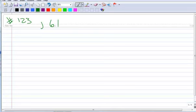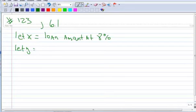So the first thing we want to do, because we have two loans, is we're going to let X equal the loan amount at 8%. So it might be from a bank or lending institution, but it's the loan that's 8%. And then we'll let Y equal the loan amount at 10%.